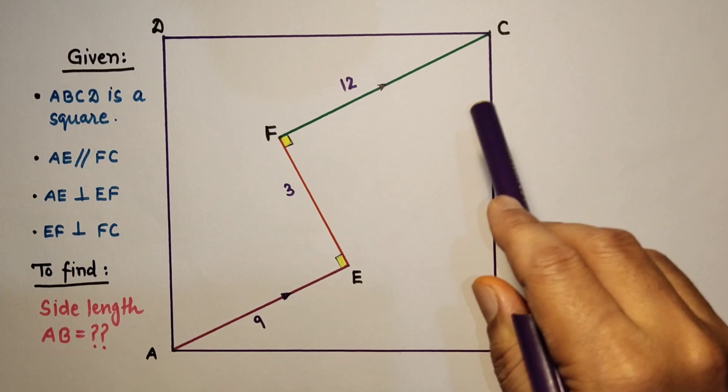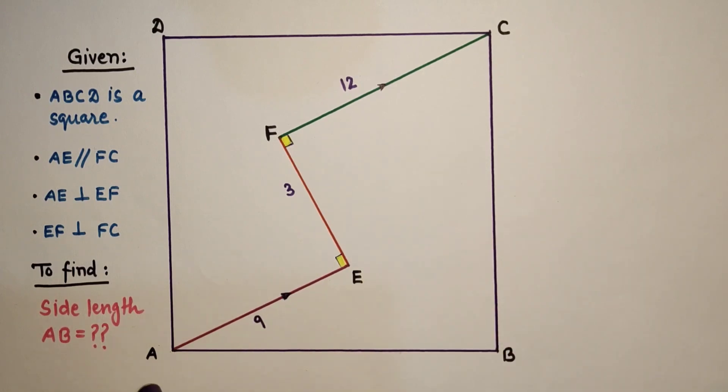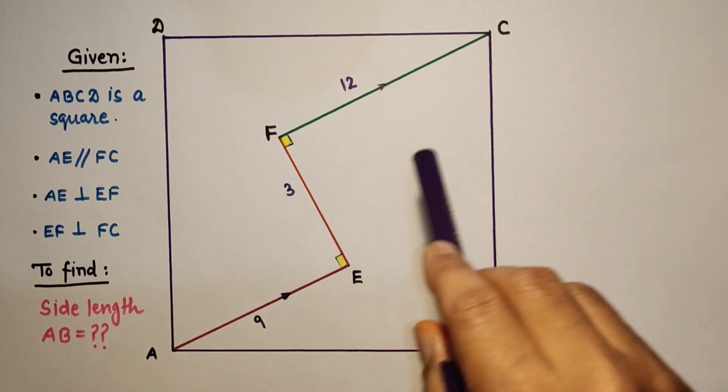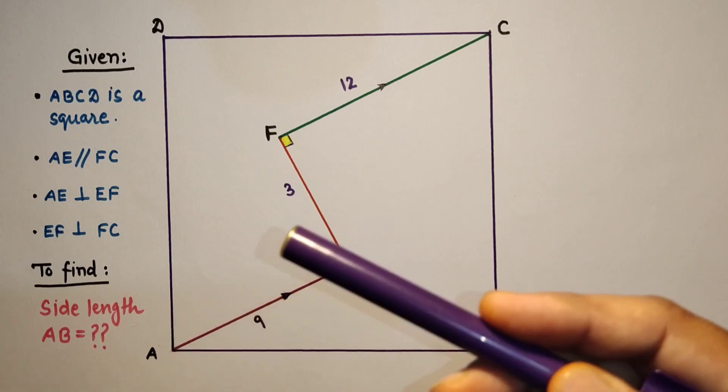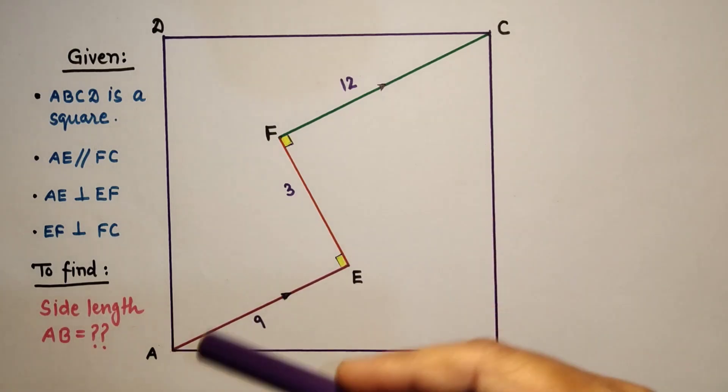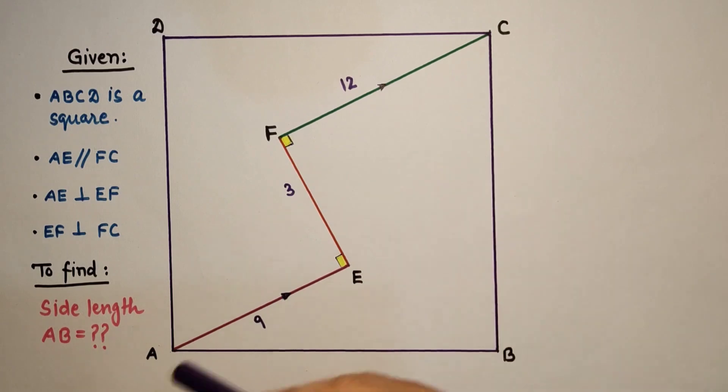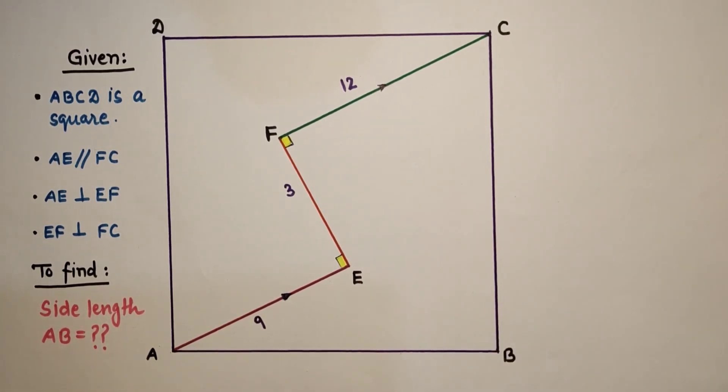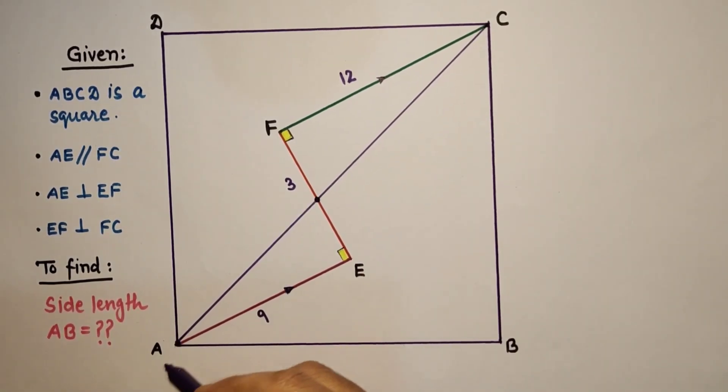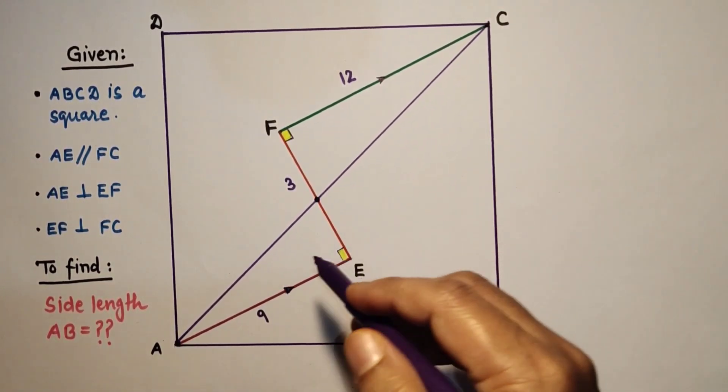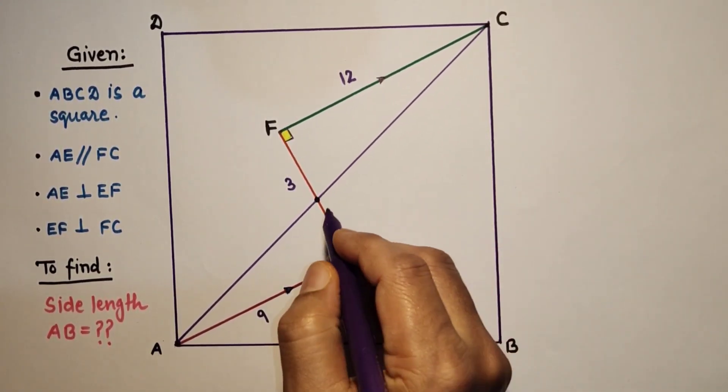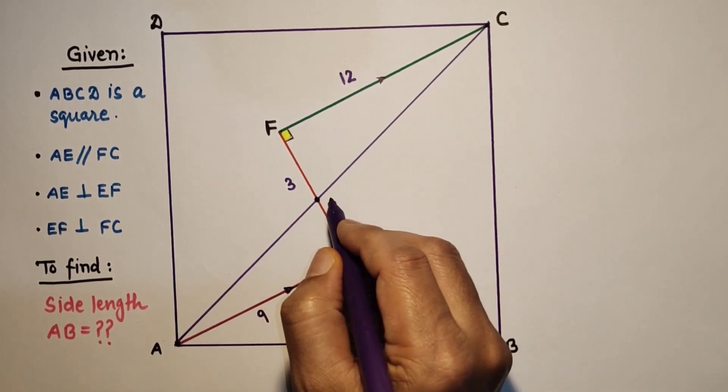Then we will see which two triangles we will take in consideration and prove similar. So let us join AC first. If we join AC, we will get two triangles. Let this intersection point be G.